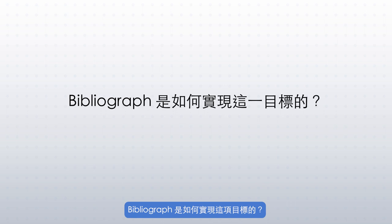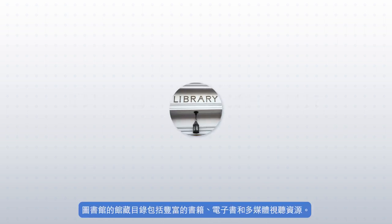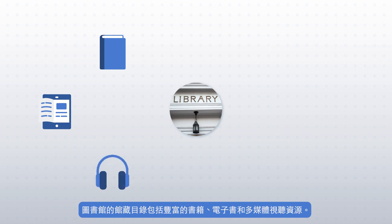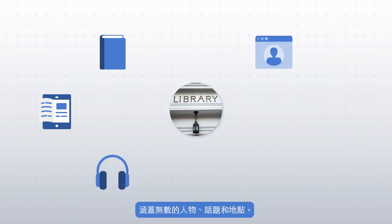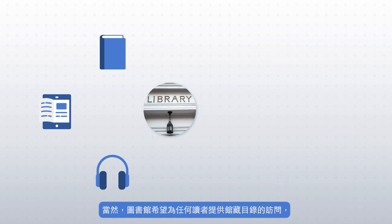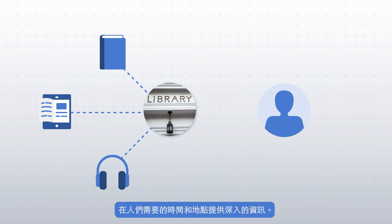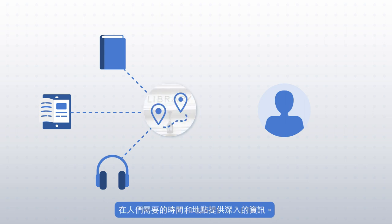How does it accomplish this goal? A library's catalog includes a rich array of books, ebooks, and audio-visual materials that span numerous people, topics, and places. Naturally, the library wants to provide access to its catalog for any user, delivering in-depth information when and where people need it.